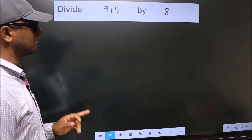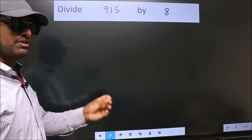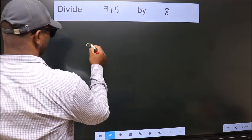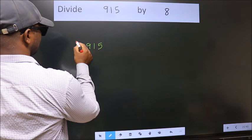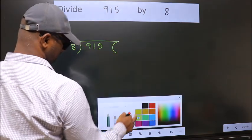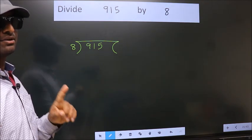Divide 915 by 8. To do this division, we should frame it in this way: 915 here, 8 here. This is your step 1.